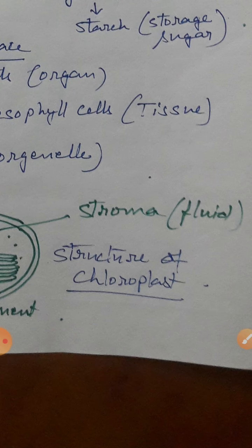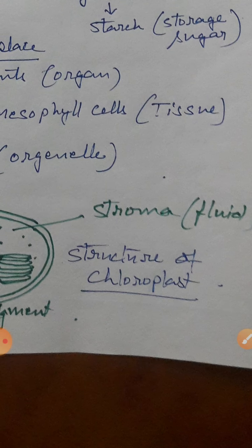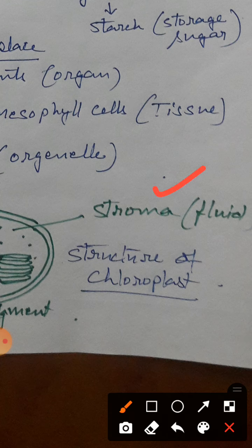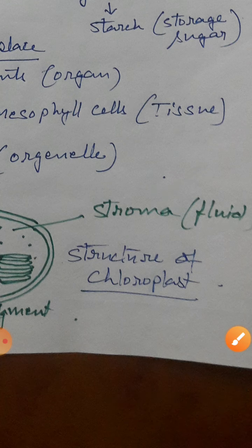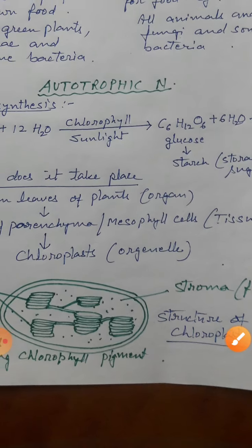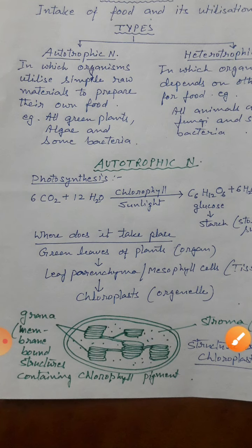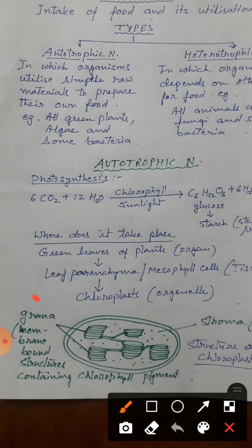Iske alawa stroma — stroma yaani fluid. Grana ke bahar jo fluid hai, that is known as stroma. To yeh ho gaya structure of chloroplast. Yahaan par do structures aapko samajhna zaroori hai: grana and stroma.